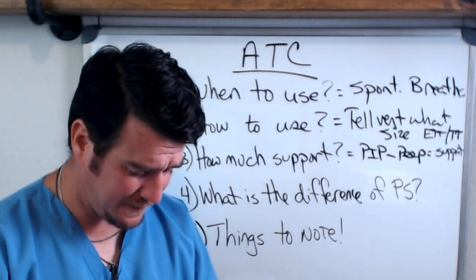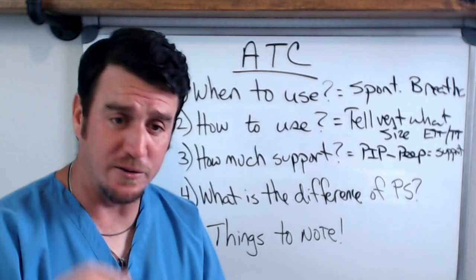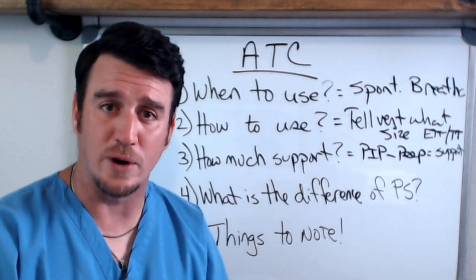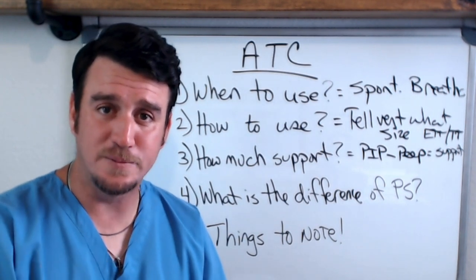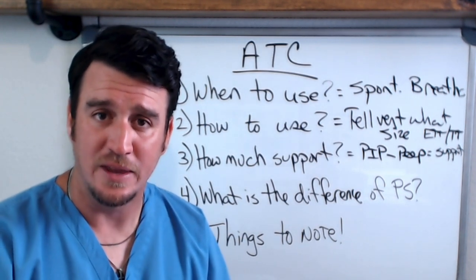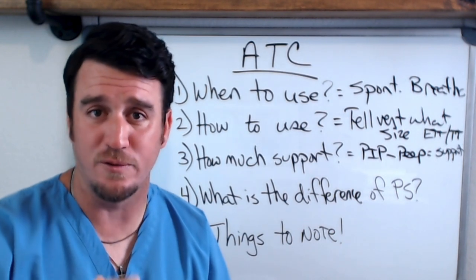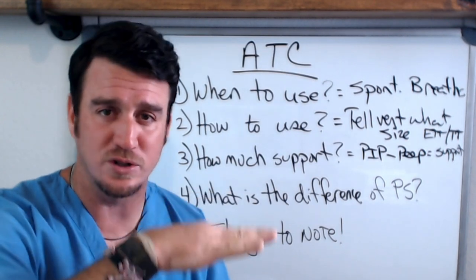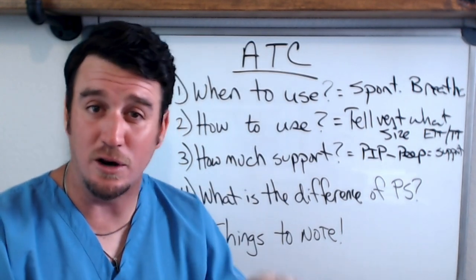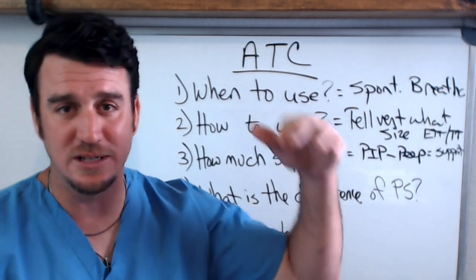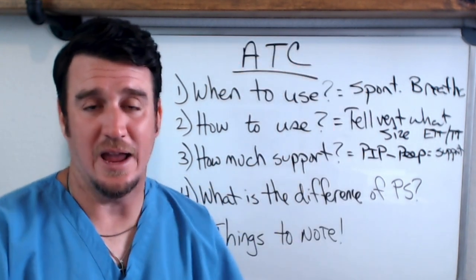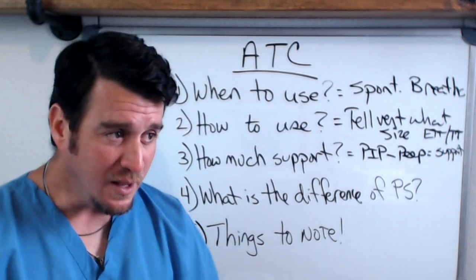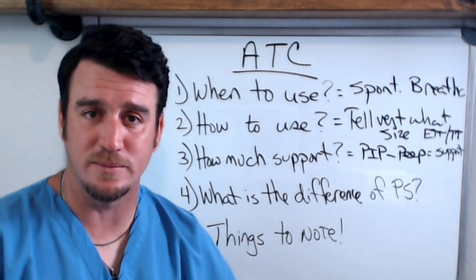Let me give you an example. We were taking care of a patient with an 8.0 tracheostomy tube. This patient was a failure to wean — on CPAP of 5 with a pressure support of 10, they were tachypneic, tidal volumes were super low in the low 200s, their rate was in the 30s, and the patient was just not able to come off the ventilator. Then one day this patient is breathing 12 times a minute.